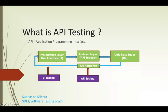Here you can see: this is the presentation layer or UI, this is the business layer where all the logic is present, and this is the database. We perform API testing at the business layer. A request goes from the UI to the business layer, then to the database, and the response comes back to the UI. We will discuss all these things in future tutorials.